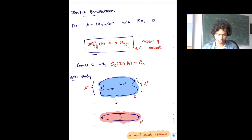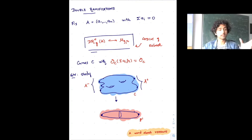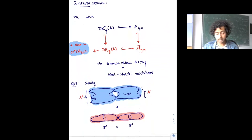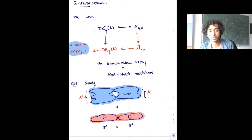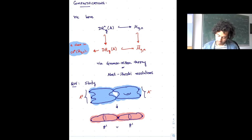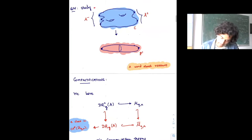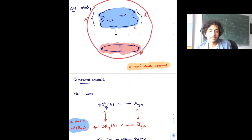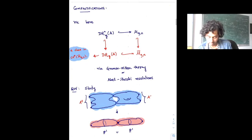These are the double ramification cycles on M_{g,n}. I'll be interested in compactifications of this cycle — extensions of DR_g^∘ to cycles on M̄_{g,n}. There are essentially two ways to get at these compactifications. The perspective I'll take is via Gromov-Witten theory. The basic idea is to look at curves that admit a map to ℙ¹ of a certain type fixed by my discrete data, and compactify by studying maps from nodal curves to nodal ℙ¹'s.